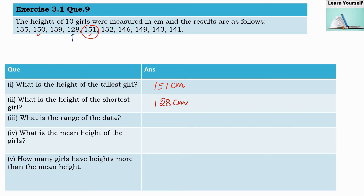Next, what is the range of the data? Range equals the highest observation minus the lowest observation. We have both values: 151 minus 128 gives us 23. So the range for this data is 23 centimeters.